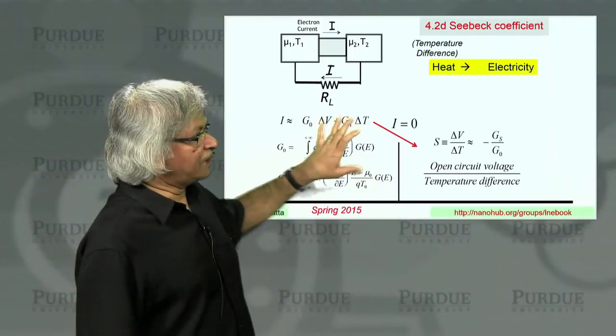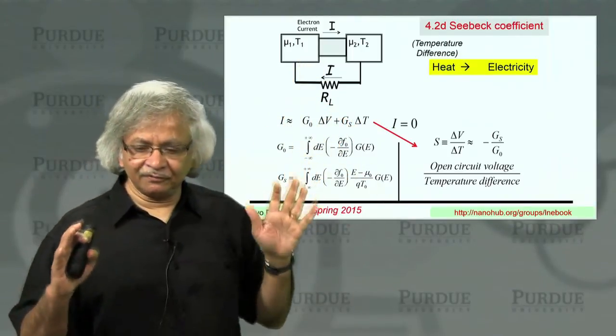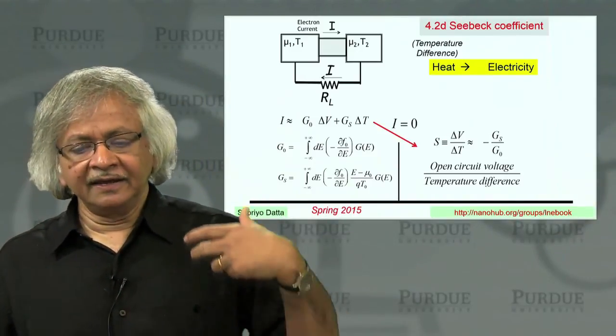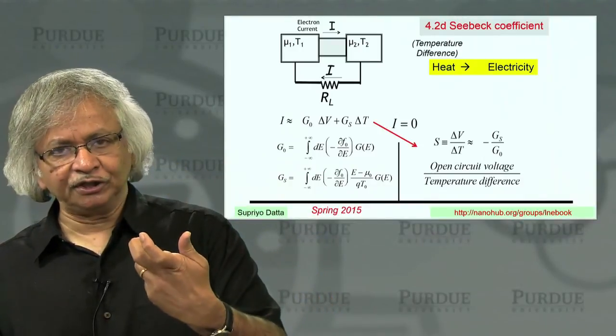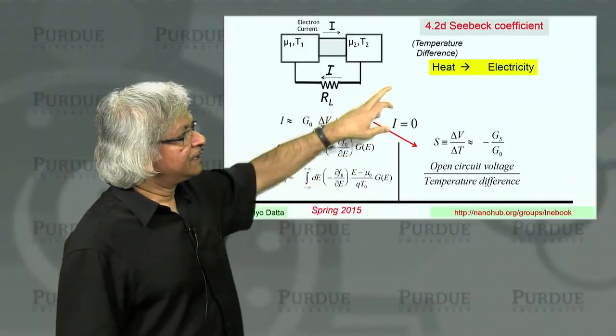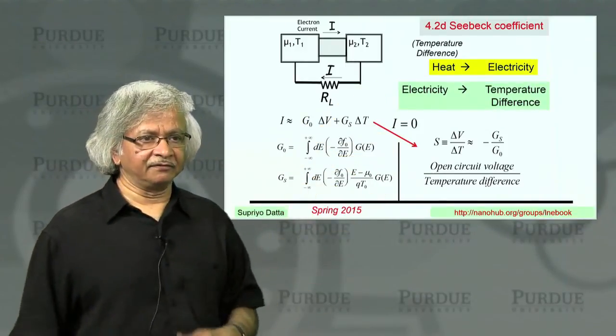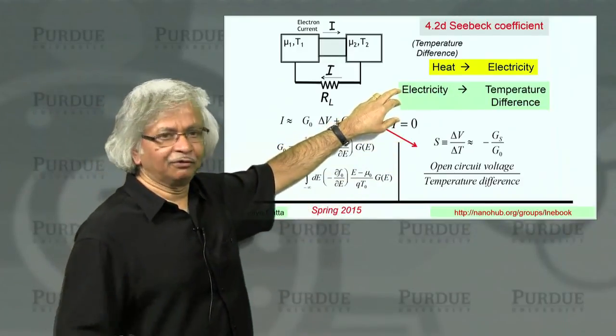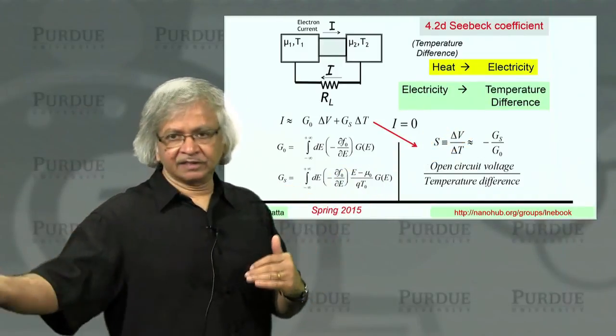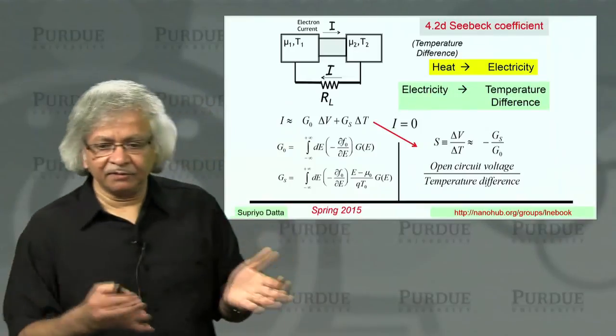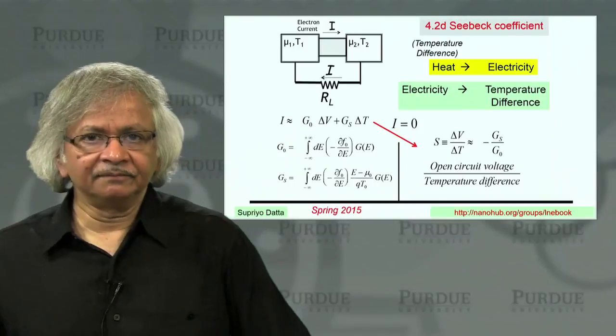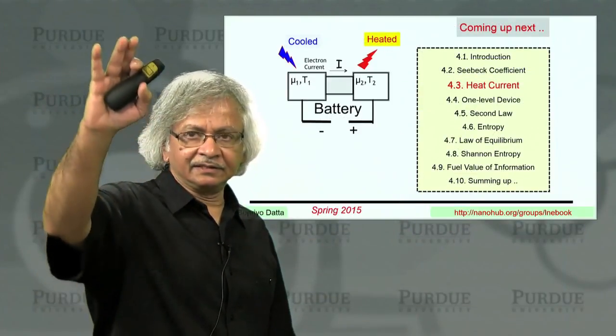So what you have now seen then is this very important physical phenomenon, the Seebeck effect, which allows you to convert a temperature difference into an electrical voltage. And in the next lecture, what I want to talk about is kind of the reverse effect, which is called the Peltier effect, where you can take an electrical voltage and use it to create a temperature difference, make something colder and something else hotter. But this is an effect that can be used for refrigeration to make something cold, for example. So that's what we'll talk about in the next lecture. Thank you.